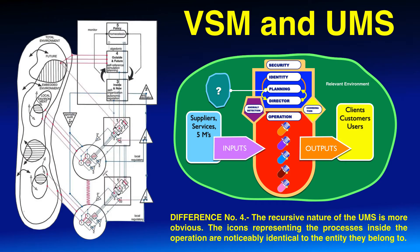Difference number four: the recursive nature of the UMS is more obvious. The icons representing the processes inside the operation are noticeably identical to the entity they belong to.